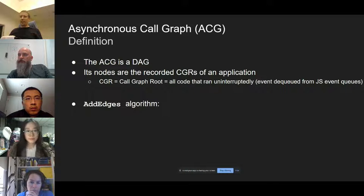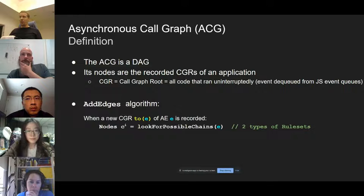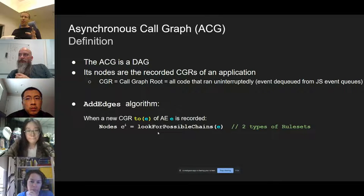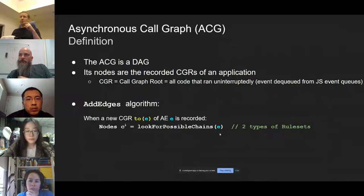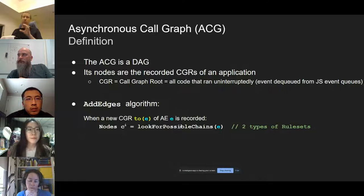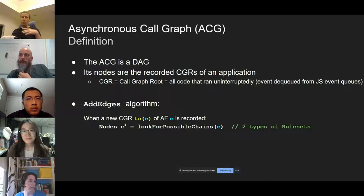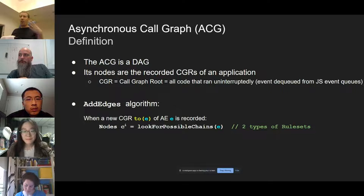At the core is the add-edges algorithm. The most difficult aspect is: we see a new call graph root — a new piece of code just dequeued from the JavaScript event queue. We're doing this entirely in user space using instrumentation and a runtime library, not touching Node, the browser, or V8. We record it, send it to our backend, and in real time you can see all of that happening.